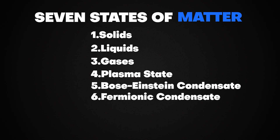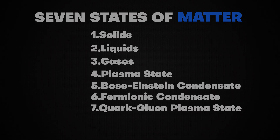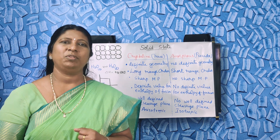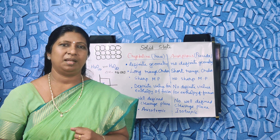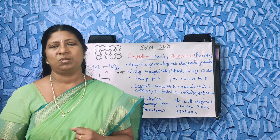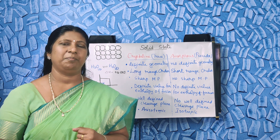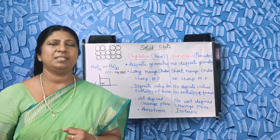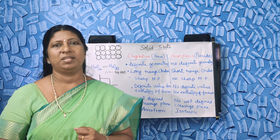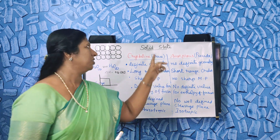Last year, we learned about the gaseous state and some properties of liquids like surface tension, viscosity, vapor pressure, etc. In this chapter, we are dealing only with solids. The chapter name is solid state.